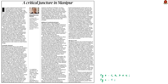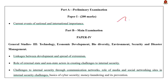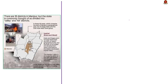This editorial article talks about the recent unrest in Manipur due to an order issued by the Manipur High Court. We will first see the issue and then some suggestions by the author to solve it. Manipur has 16 districts divided into valley and hill districts. The valley is dominated by the non-tribal Meitei community, while the hills are dominated by the Nagas and Kukichin tribes.